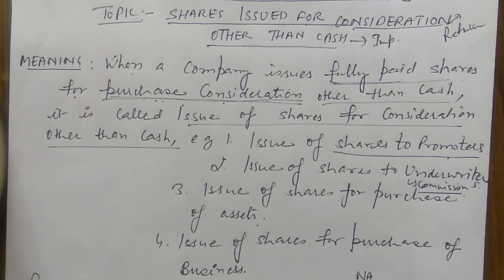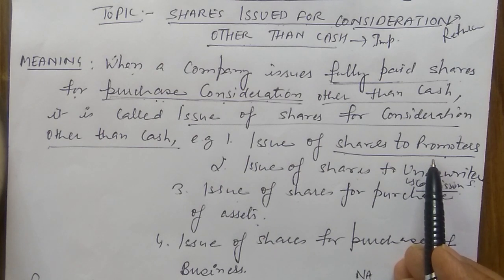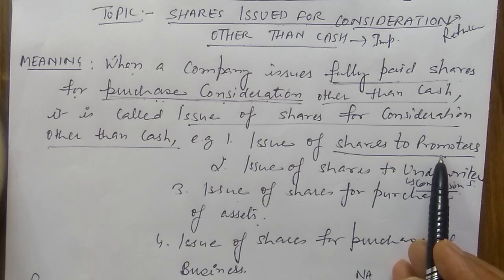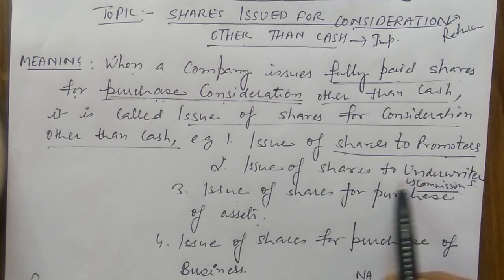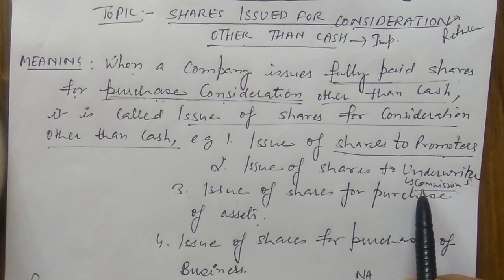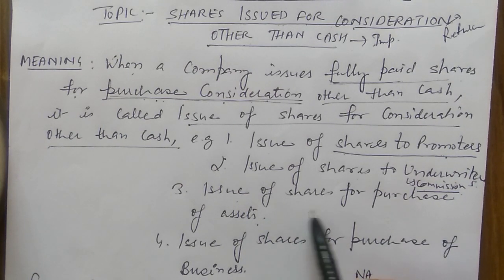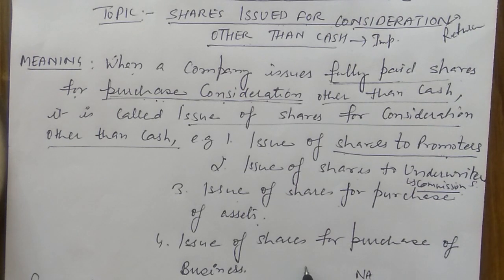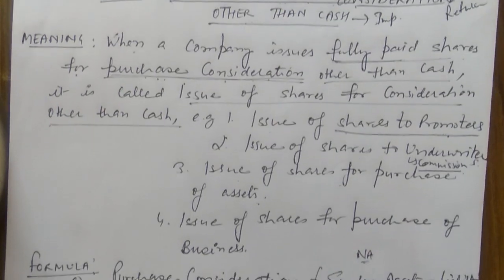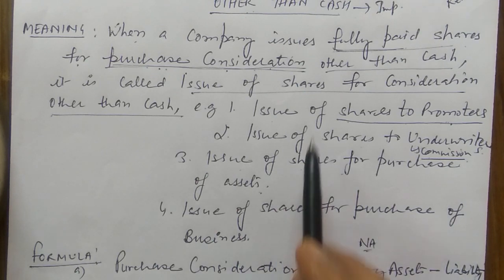There are four different cases where we issue shares other than cash: first, shares issued to promoters for their promotion/incorporation expenses; second, to underwriters for their commission; third, for purchase of assets from a vendor where payment is made in shares instead of cash; fourth, when a company takes over an entire running business and issues fully paid shares as purchase consideration to the seller.